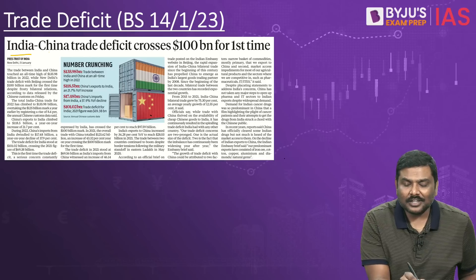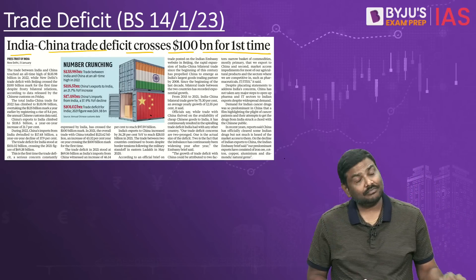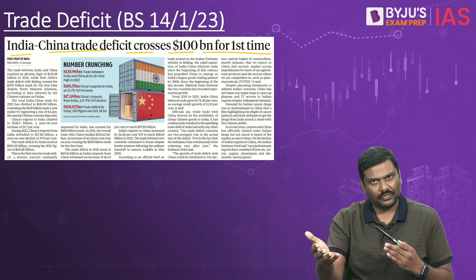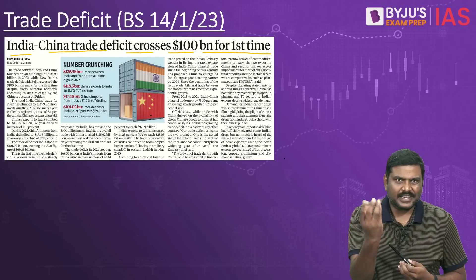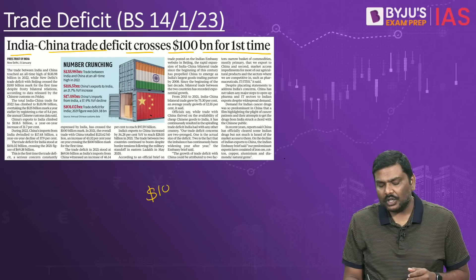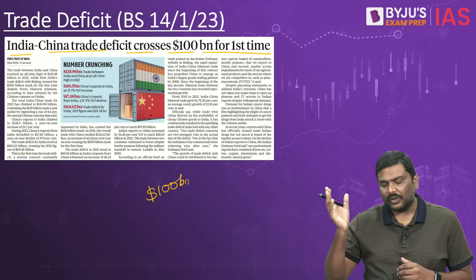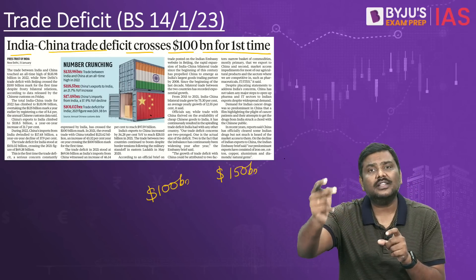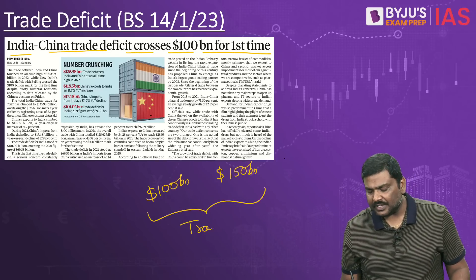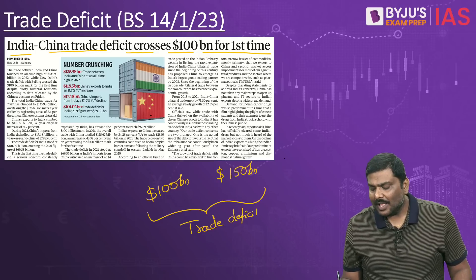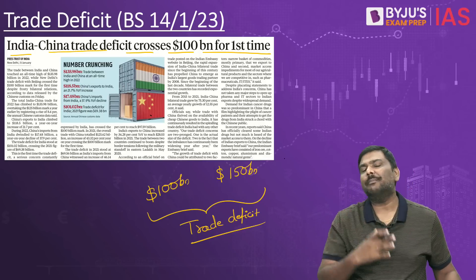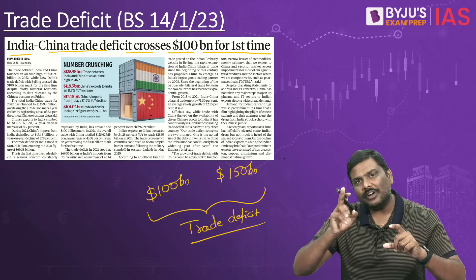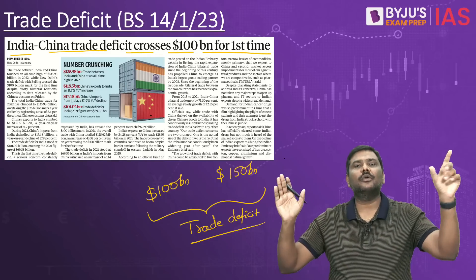Next article: India-China trade deficit crosses $100 billion for the first time. Trade deficit means the value of exports is lower than the value of imports. For example, if you export $100 billion and import $150 billion, the $50 billion difference is a trade deficit. Government of India has been raising concerns about India's general trade deficit, and specifically the trade deficit with China has been higher and has been growing year on year.